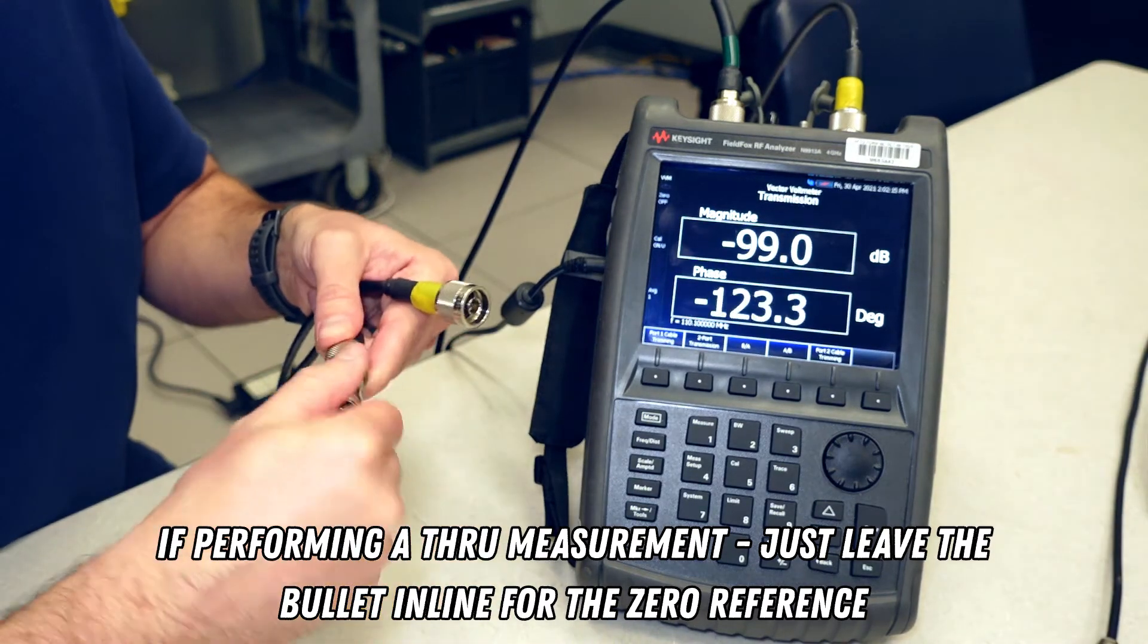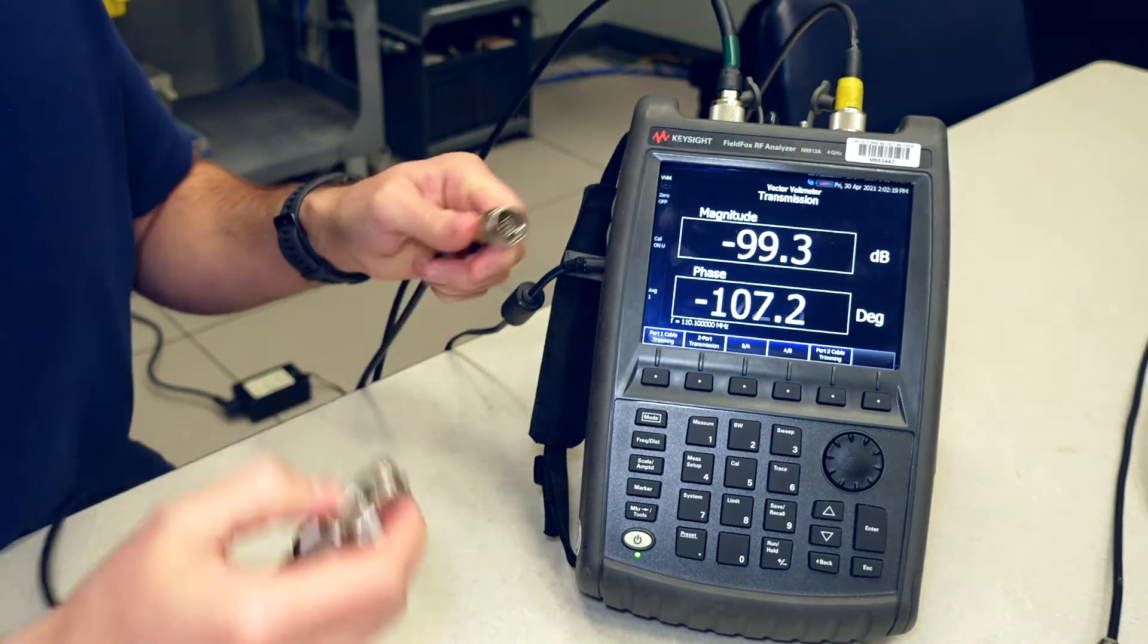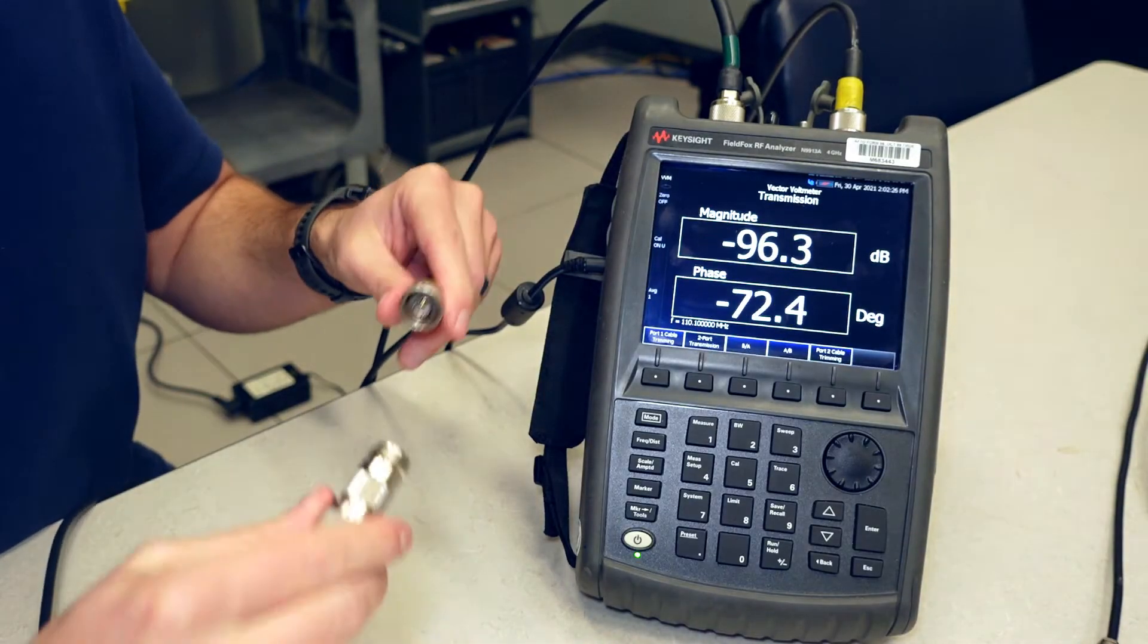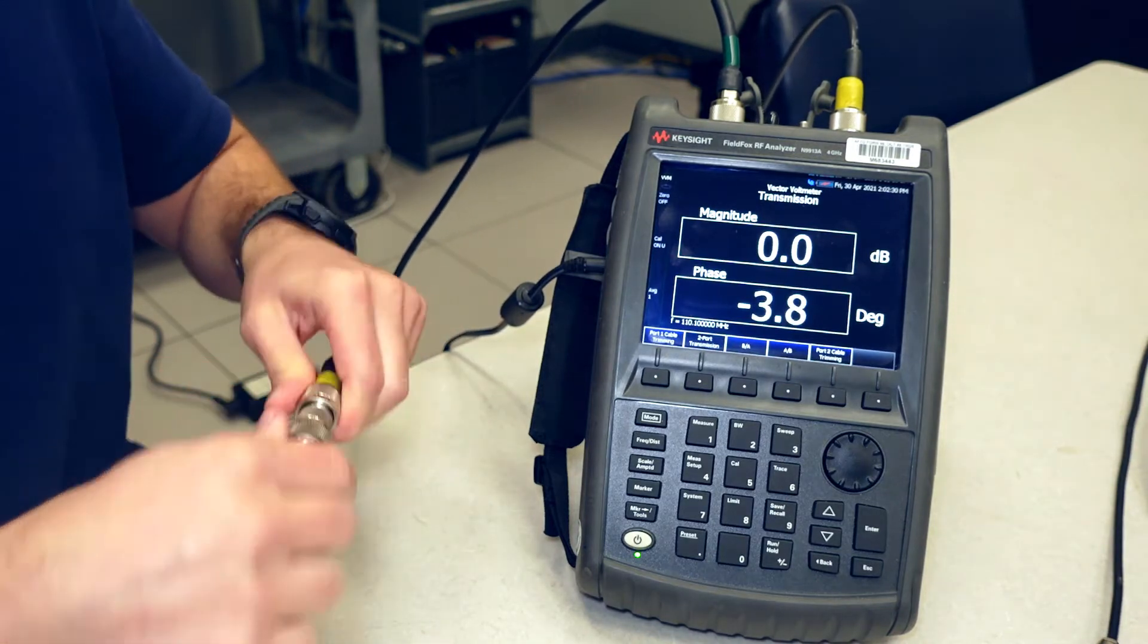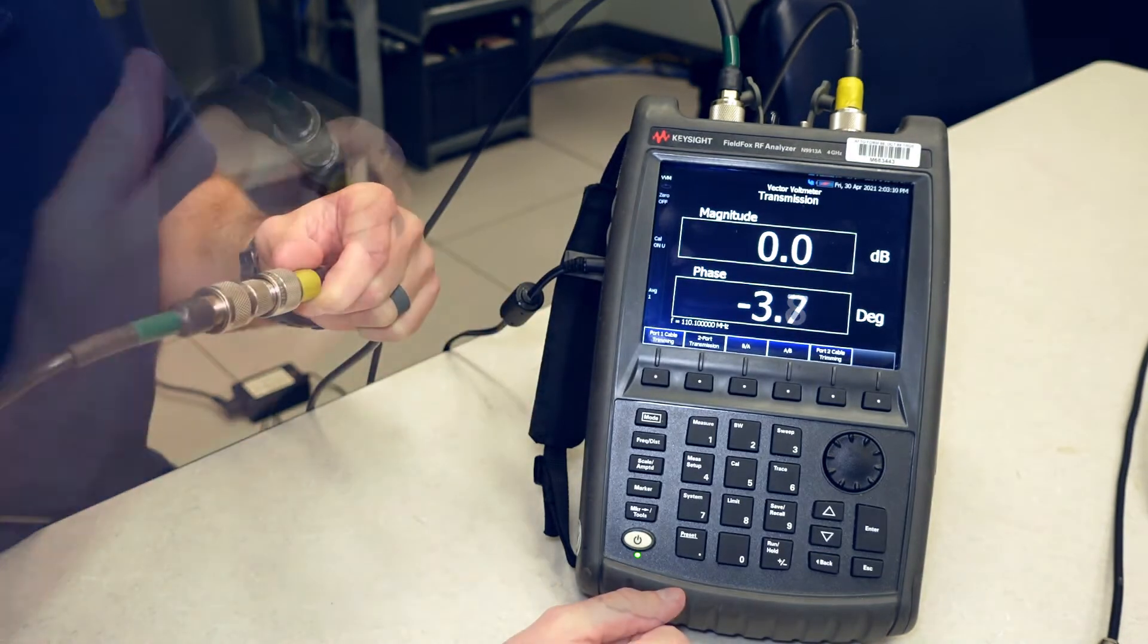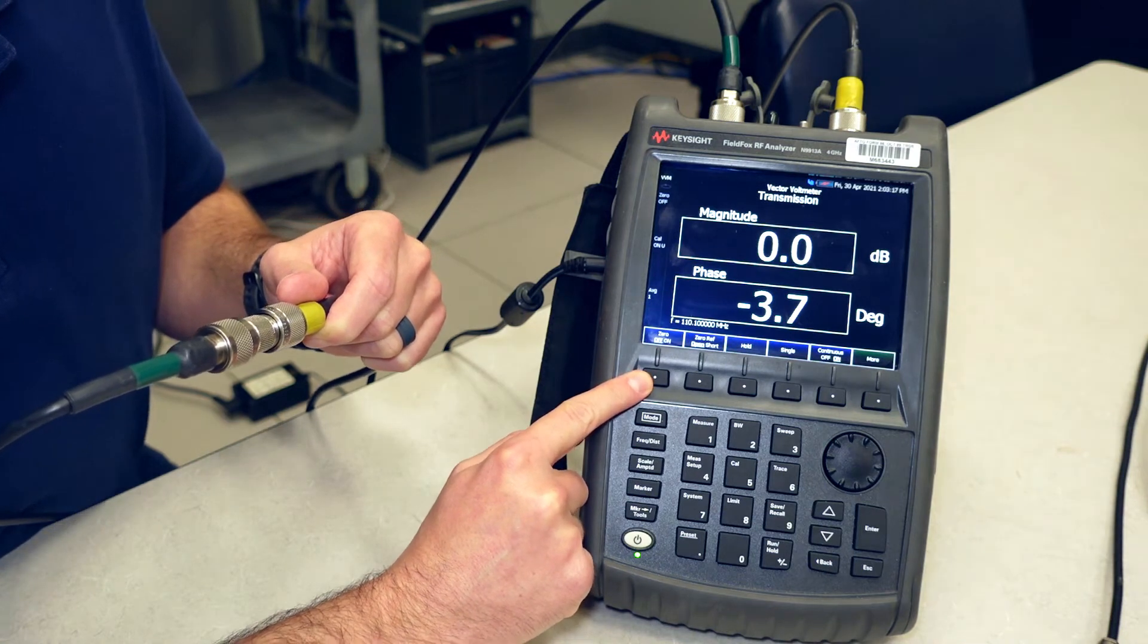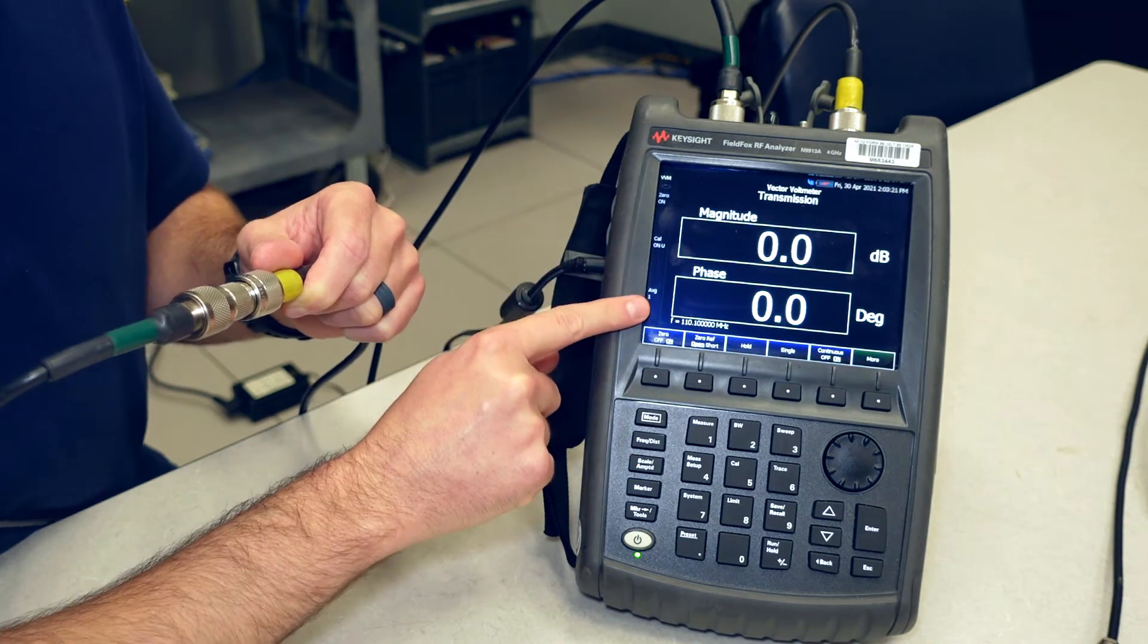Now we're going to connect port one to port two so that we can take a zero reference. You can see the numbers are jumping all around because there's not a complete path between port one to port two. It's basically port one is in an open. Okay, now we've completed the RF path or the transmission path. We're just going to hit number four for measure setup and we're going to select under the zero function, the soft key. Right now it says off. I'm just going to turn it on and that gives us a zero amplitude, zero degree phase.